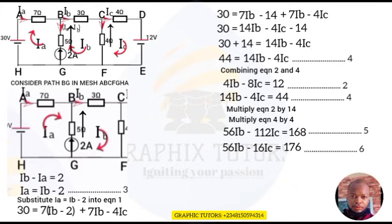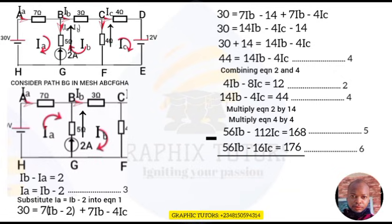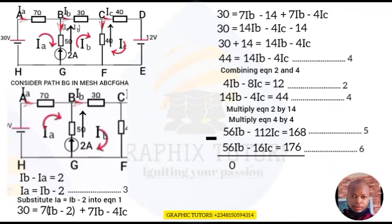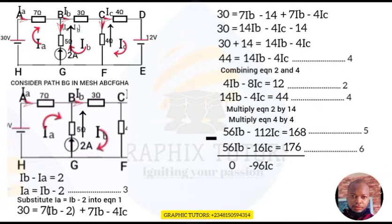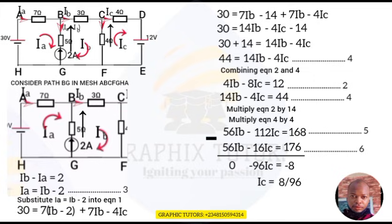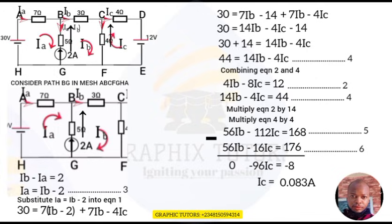Both equations have 56ib, which are both positive, so I subtract by applying a negative sign to Equation 6. Subtracting: (56ib − 56ib) + (−112ic + 16ic) = 168 − 176, which gives −96ic = −8. Therefore ic = 8/96 = 0.083 amperes.